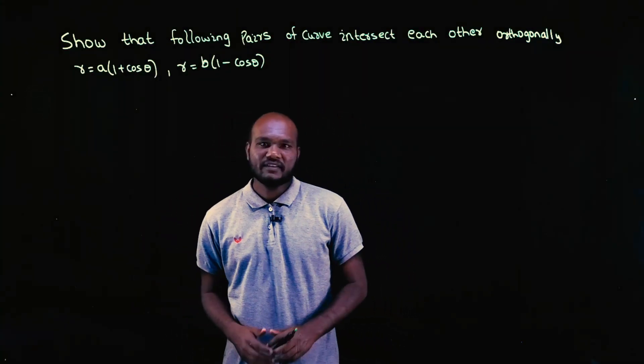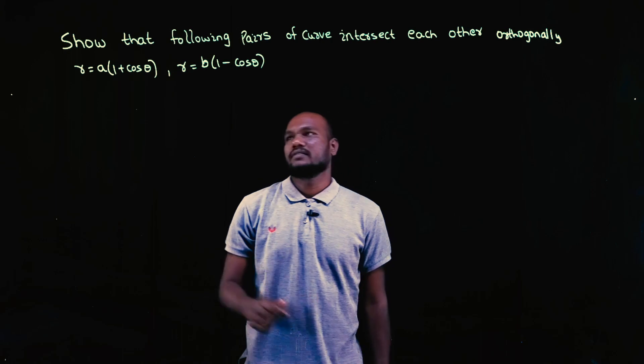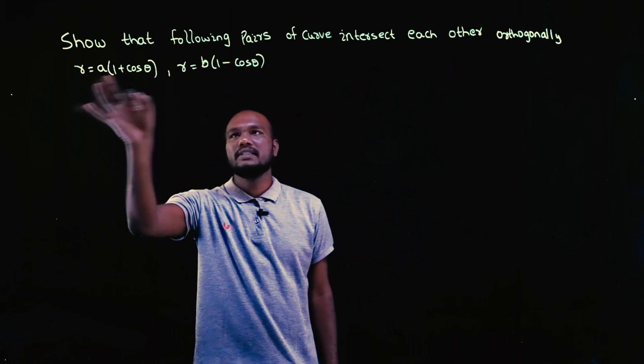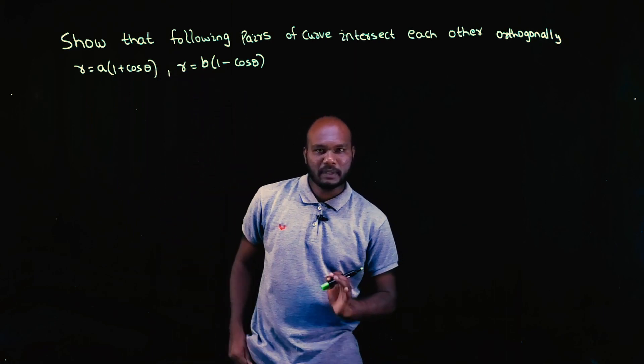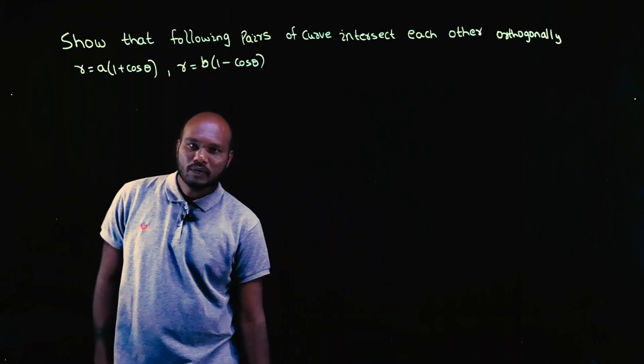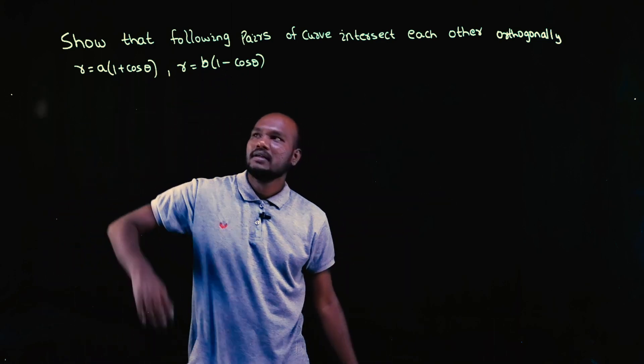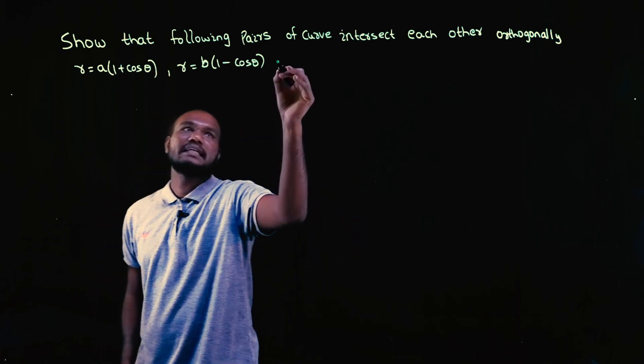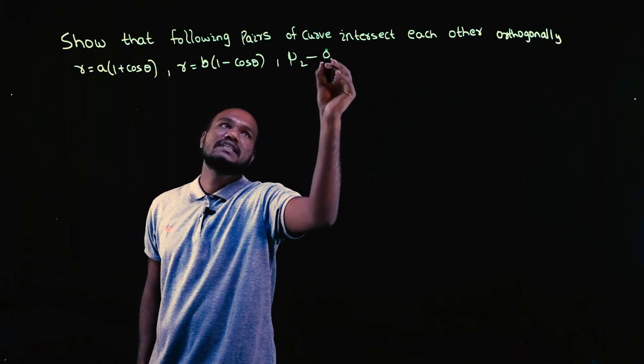Hey guys, welcome to another video in this series where we are solving 21 Scheme M1 questions from the first module on polar curves. Make sure to subscribe for more videos like this. The question asks us to show that the following pairs of curves intersect orthogonally, meaning the angle between them should be 90 degrees, that is π/2. To do this, we find φ₁ and φ₂ separately, then compute φ₂ minus φ₁.